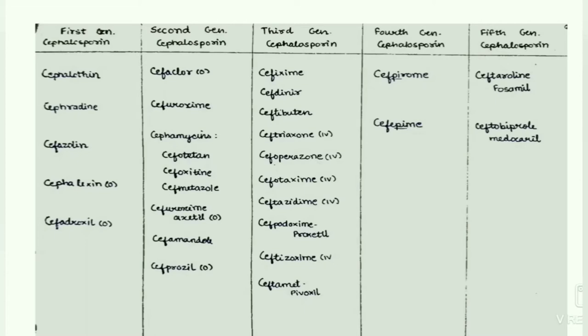The third generation cephalosporins include cefixime, cefdinir, ceftibuten, ceftriaxone, cefoperazone, cefotaxime, ceftazidime, cefpodoxime proxetil, ceftizoxime, and ceftamate pivoxil. Of these, ceftriaxone, cefoperazone, cefotaxime, ceftazidime, and ceftizoxime are given parenterally. The fourth generation cephalosporins include cefpirome and cefepime. The fifth generation cephalosporins include ceftaroline and ceftobiprole.